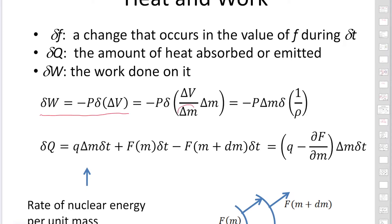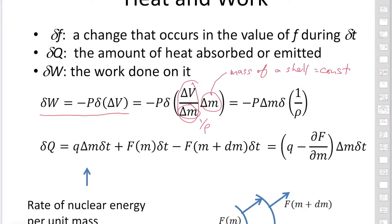The work done on the gas inside a cylinder is expressed as pressure times the volume change delta V. So delta W equals minus P times delta V. We then divide delta V by delta M and multiply by delta M, where delta M is the mass of the spherical shell, which is constant. So we can move it outside the delta. This gives minus P times delta M times delta(1/rho), because the quantity V/M is 1/rho.